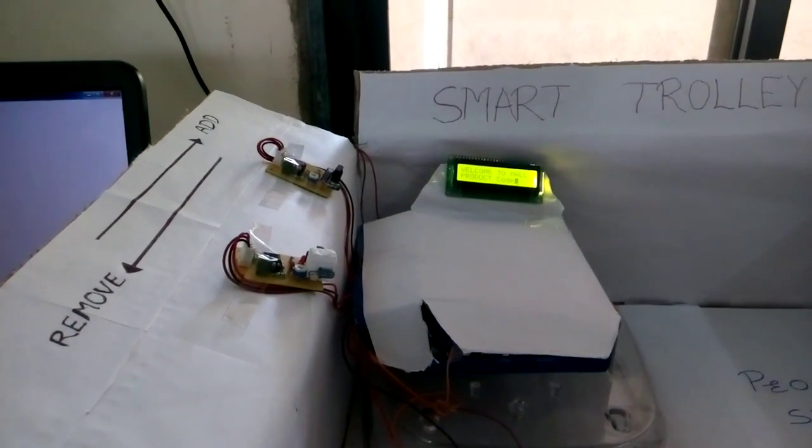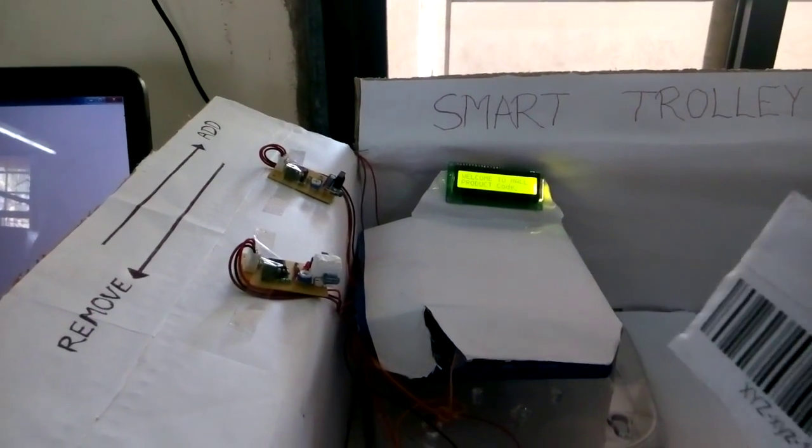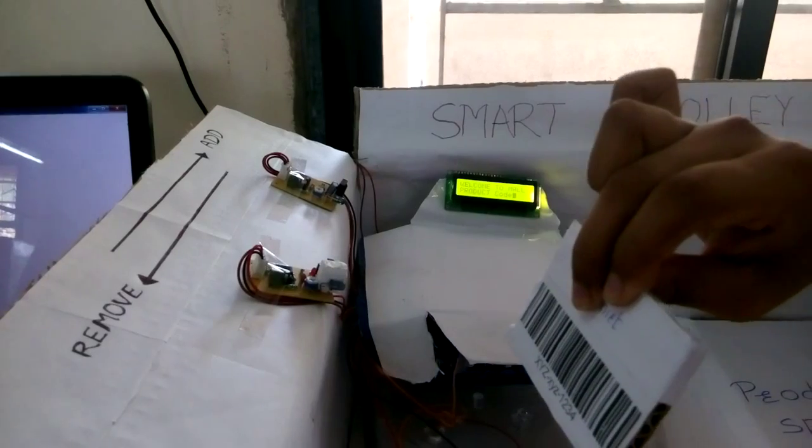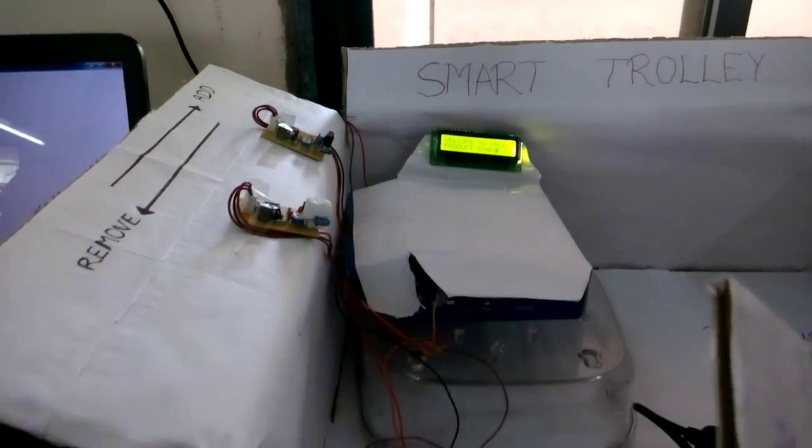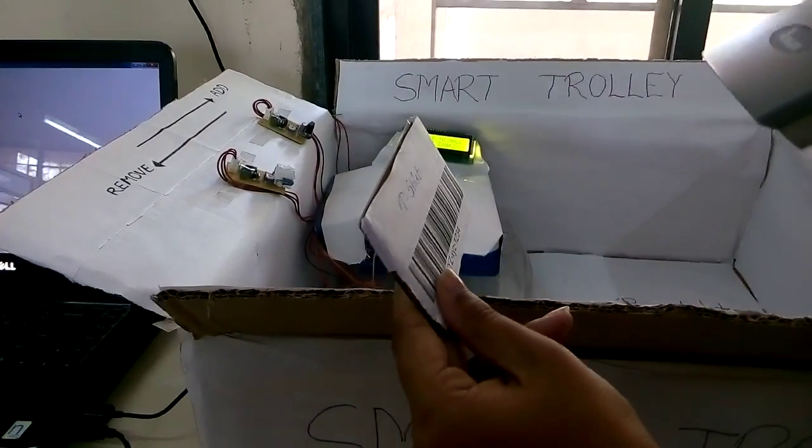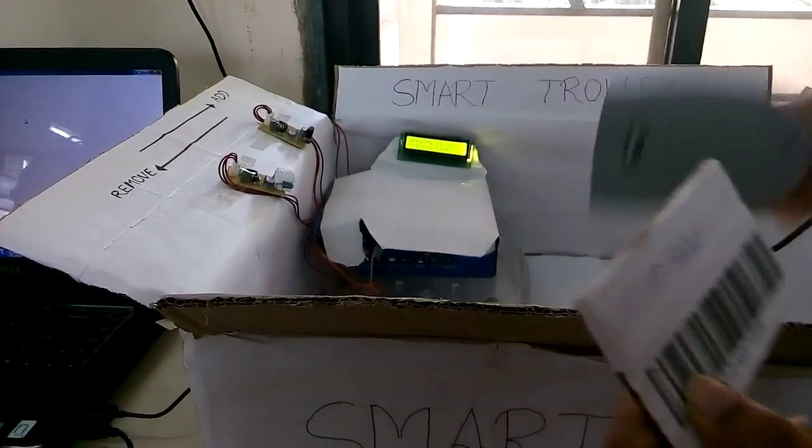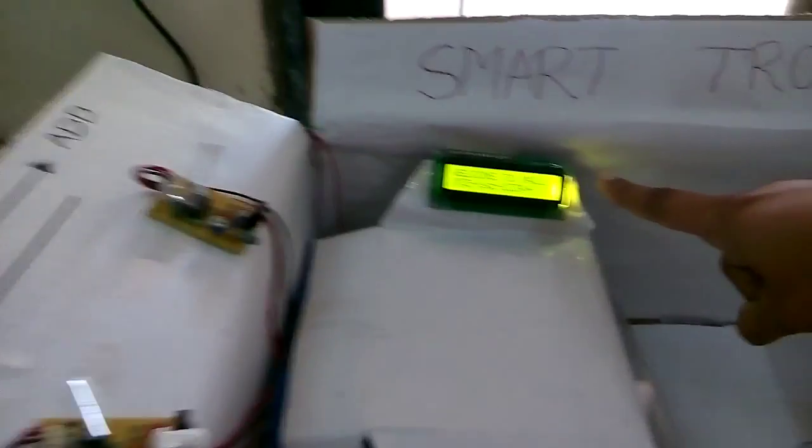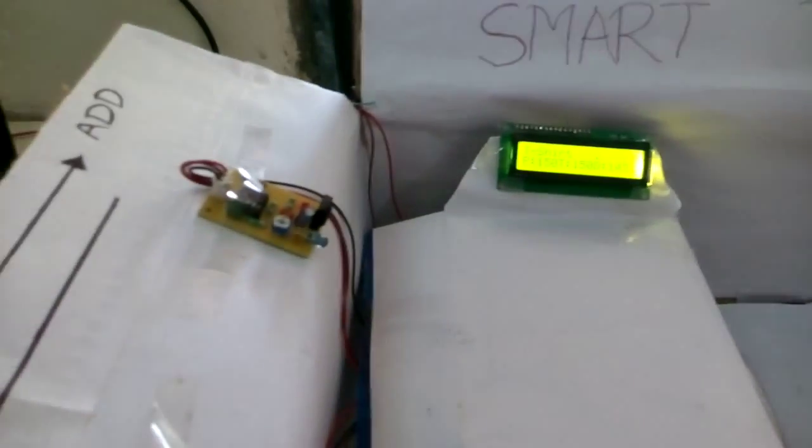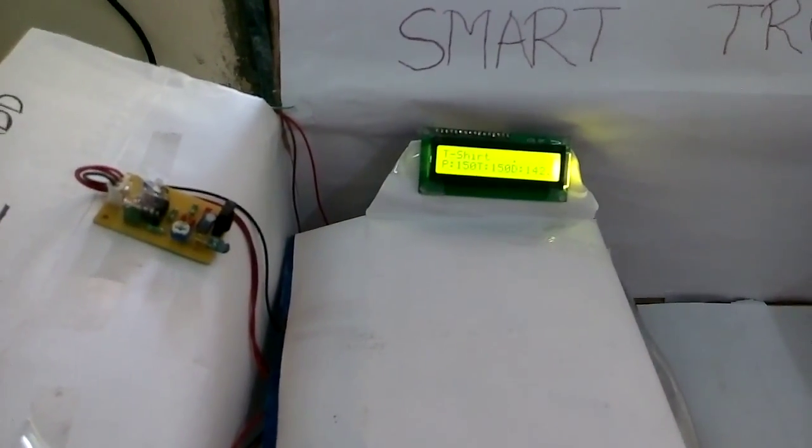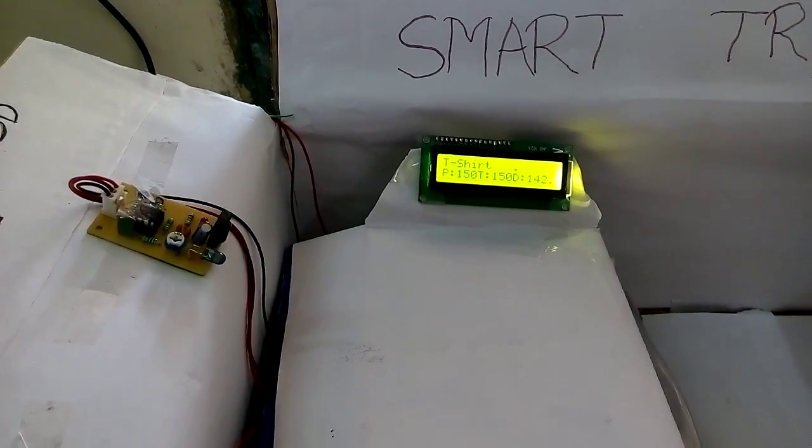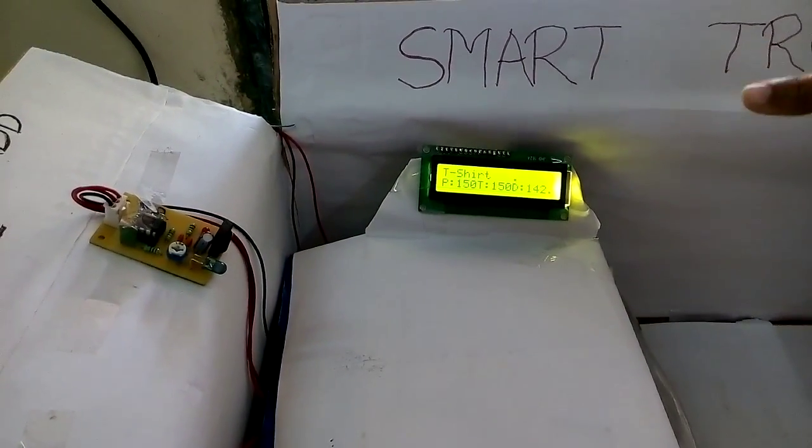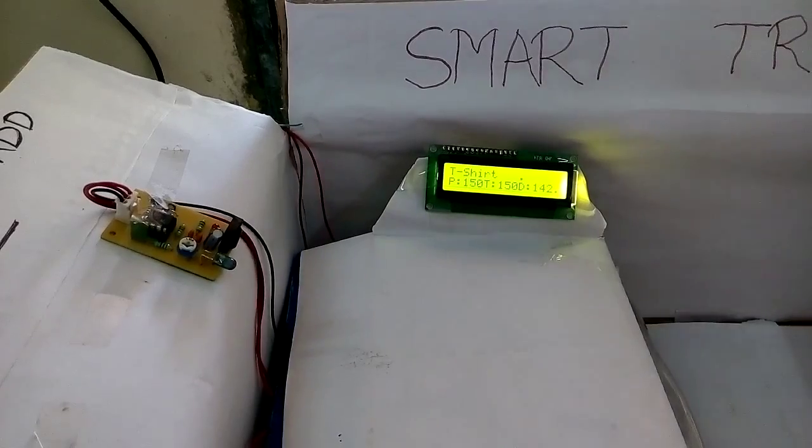Now let's add one product. Here we cut these two IR sensors in one sequence for incrementing and scan the barcode of the product. We can see the code on the LCD display as well as the information regarding the product which is saved at the PC side is displayed on the LCD which is communicated through Zigbee communication.